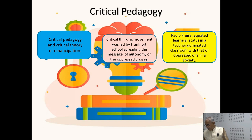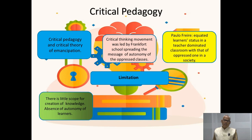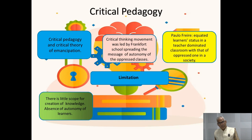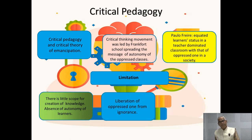Paulo Freire equated learners in a teacher-dominated formal classroom as the oppressed classes — they are equated with oppressed classes of society who do not have enough scope to create their own knowledge. Rather, they follow structured knowledge and reproduce it as developed by experts. So in the absence of learner's autonomy, education does not take place. Education is equated with liberation — ya vidya sa vimuktae — liberation of a learner from ignorance.